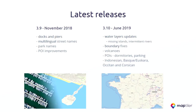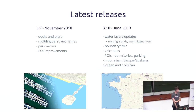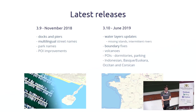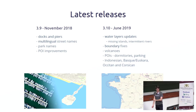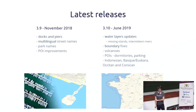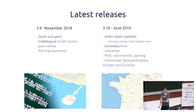Since the last presentation at State of the Map 2018, we made two releases. Version 3.9 in November — the biggest change was in the water part, but we also added multilingual street names, which is important for countries like Belgium or Finland that have two official languages. And in version 3.10, we updated the water layers and some boundaries, and added four new languages — yes, also Basque.